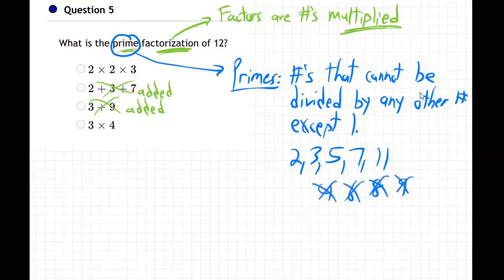And I skipped 9 because 3 goes into 9. Three times 3 is 9. Anyway, so the answer is this one, isn't it? Because this is the one that's made out of primes and it's multiplied.